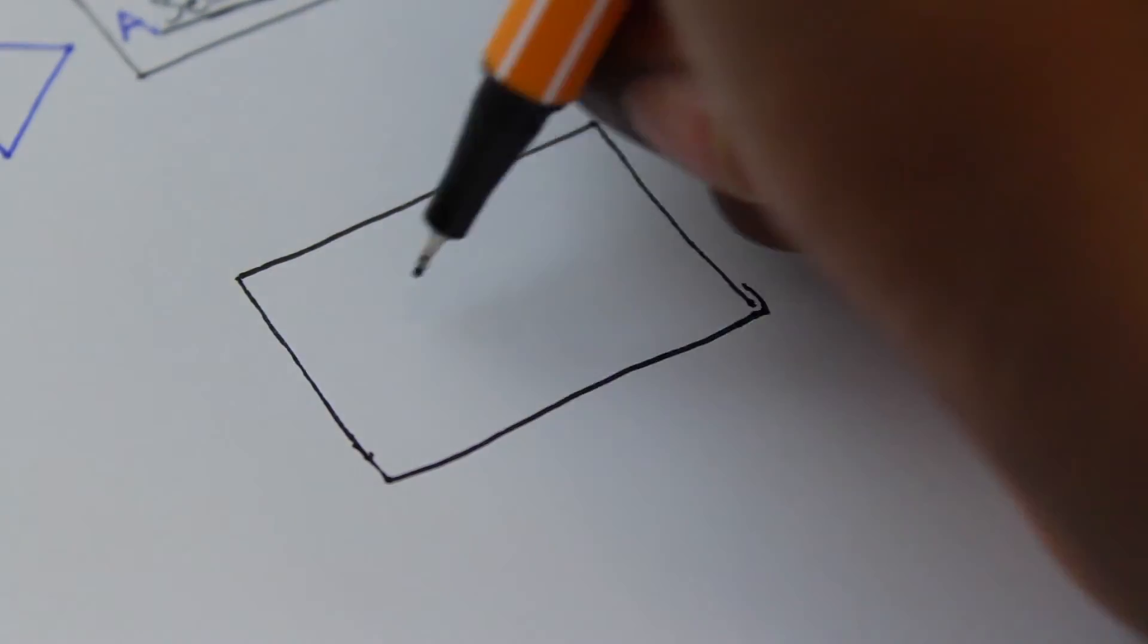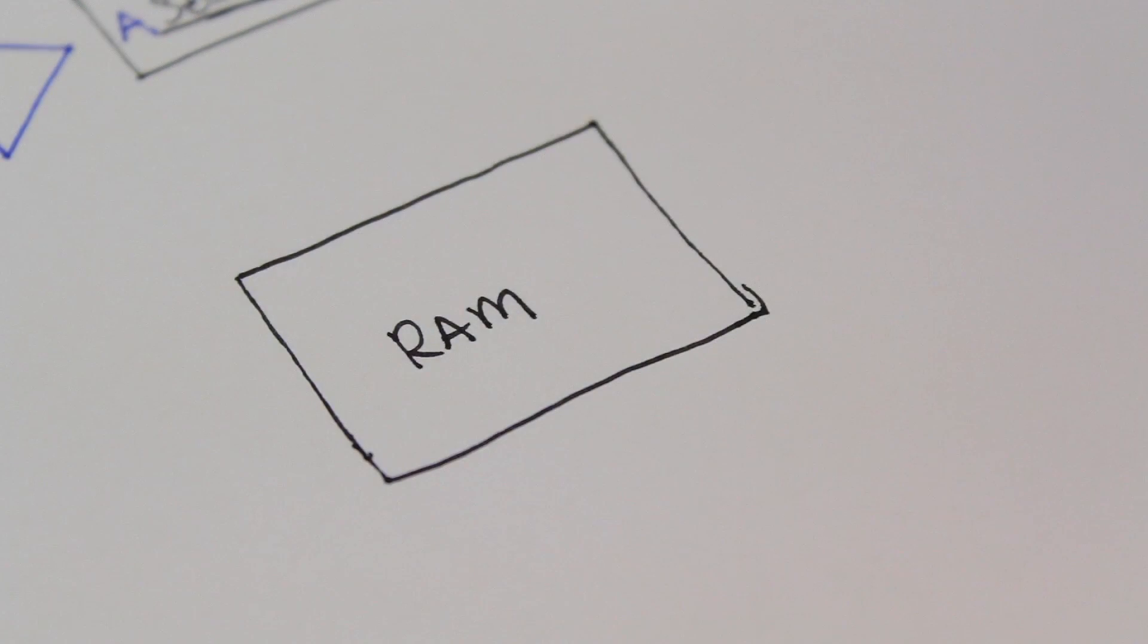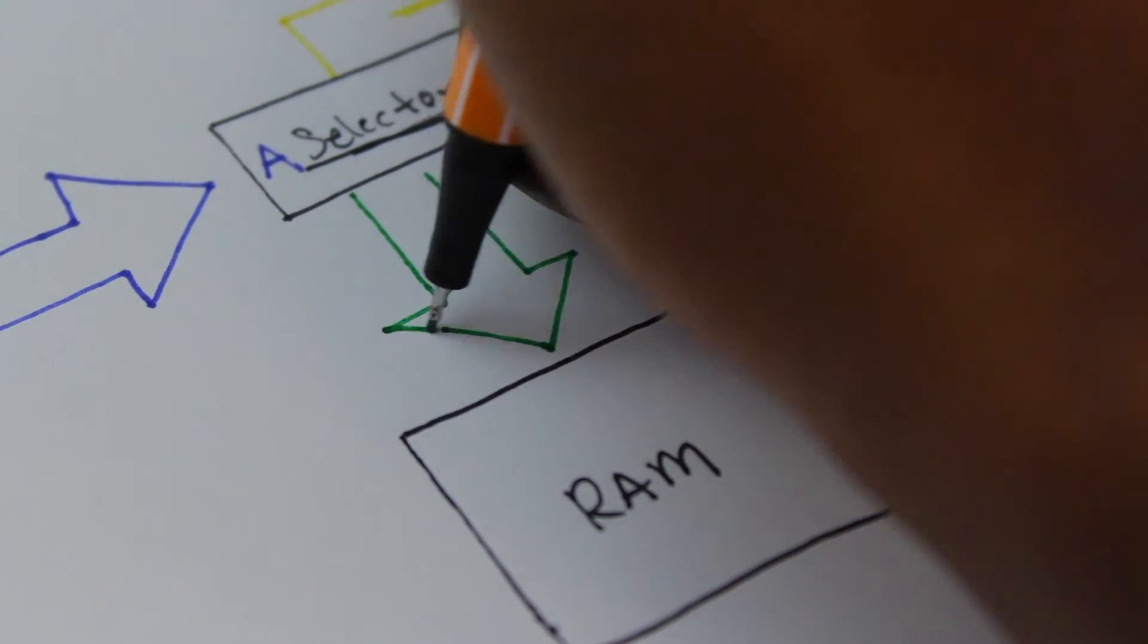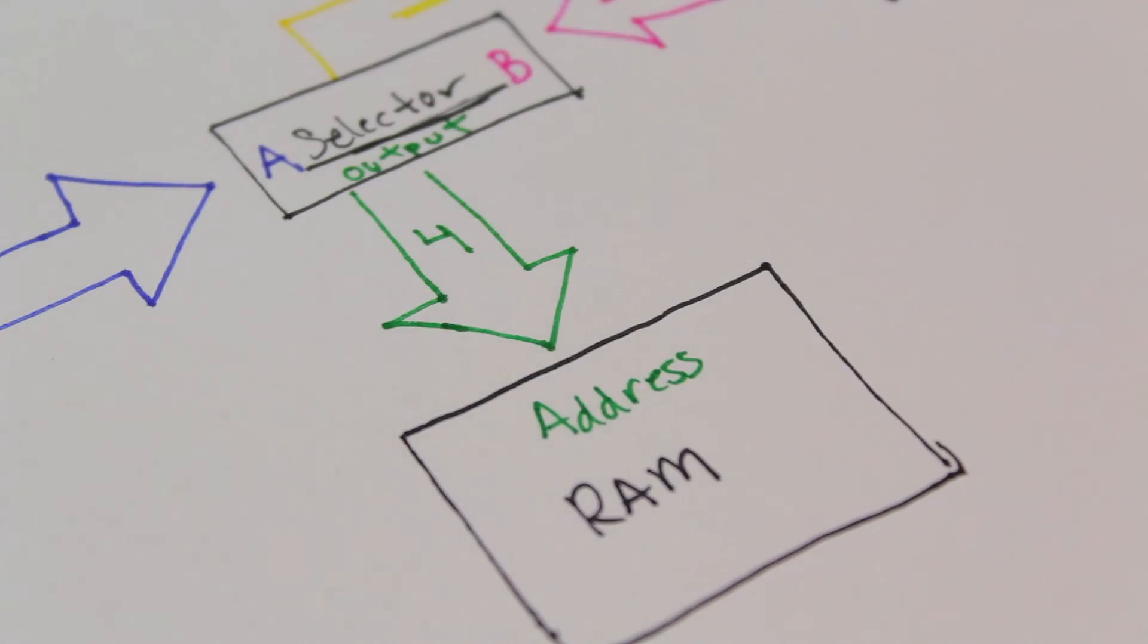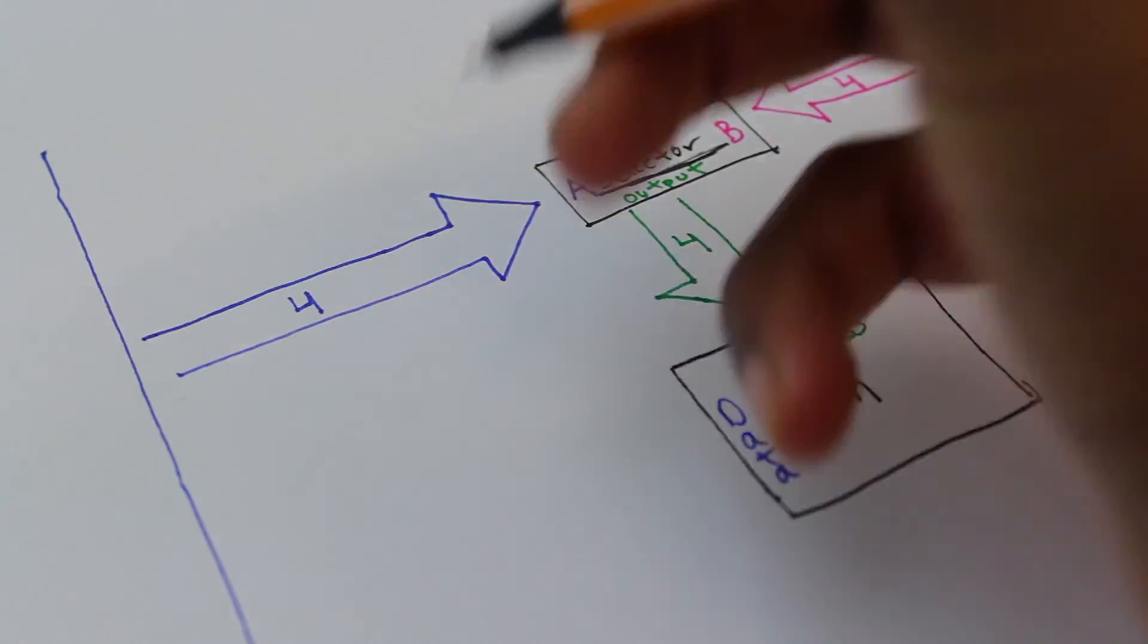Next, we have the actual RAM itself. The address we use to access a single byte from our RAM comes from the address selector we just talked about. Next, we have the data for the RAM in case we need to set a value for a certain byte.